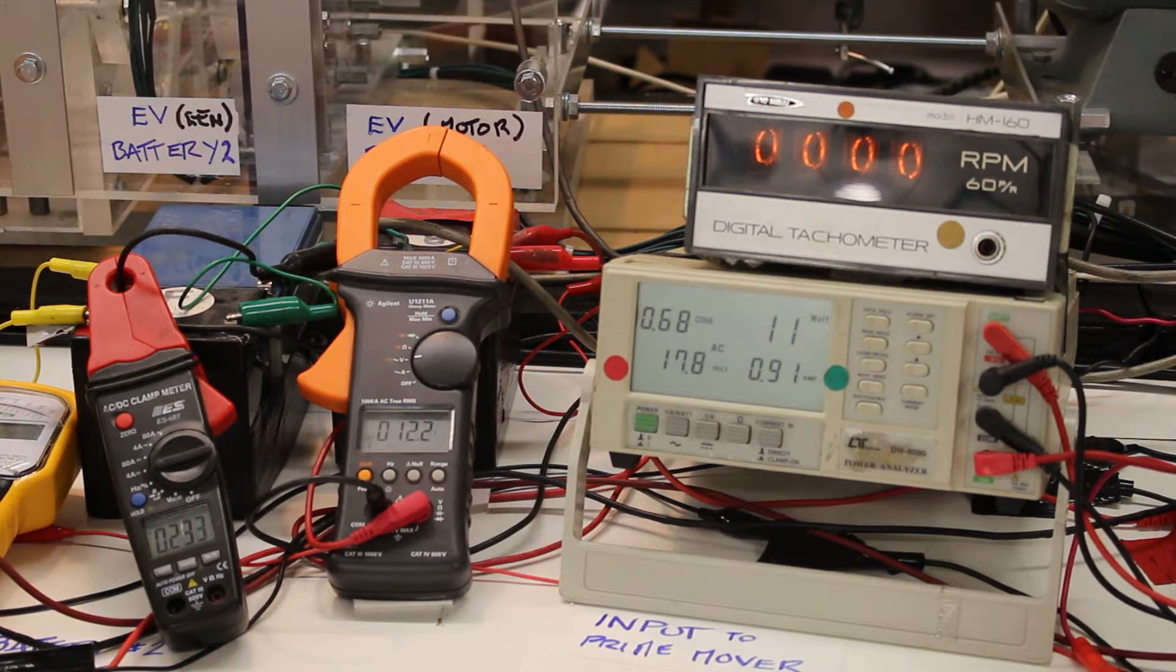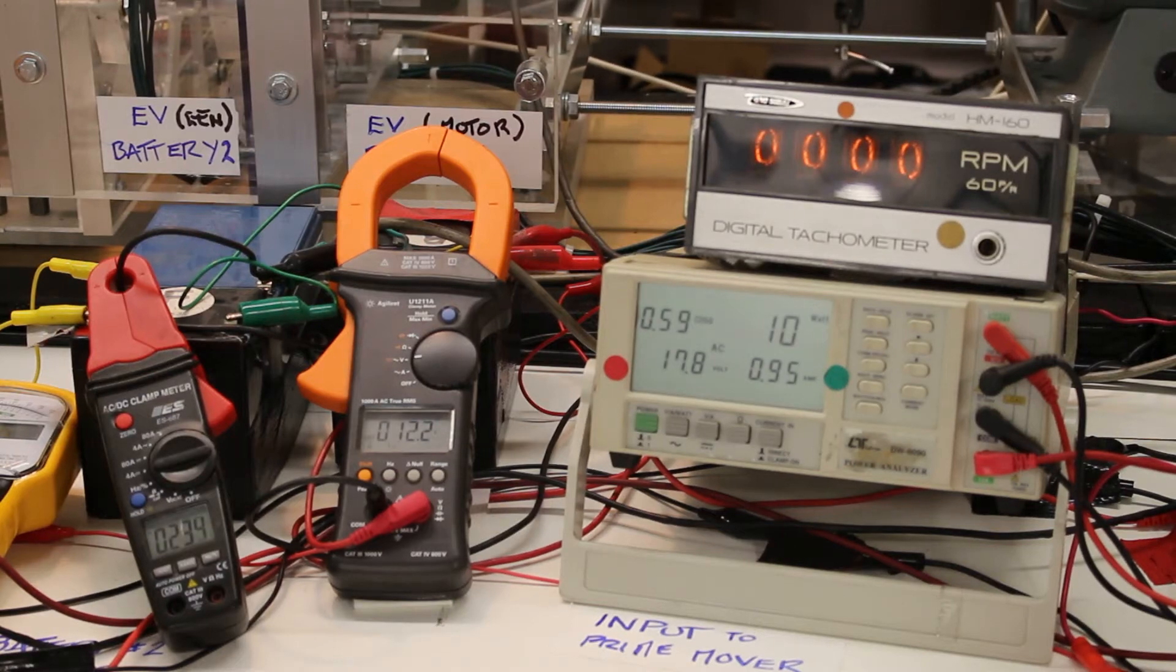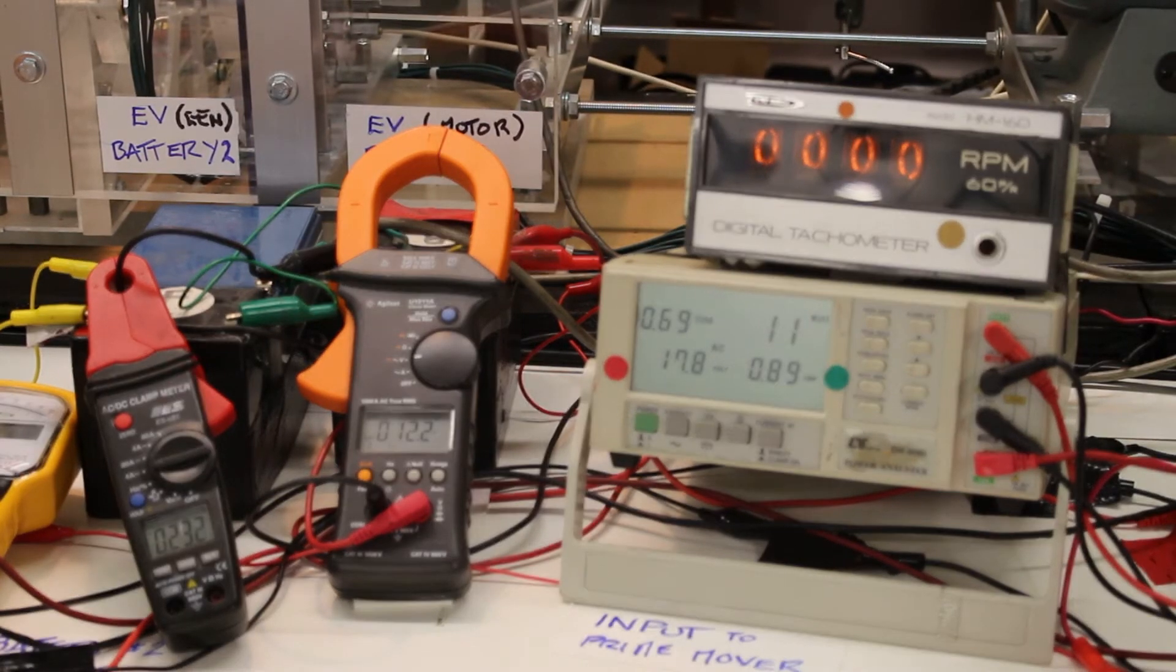So now the input current to the RegenX motor coils is 0.9 amps and the output current is 0.231.